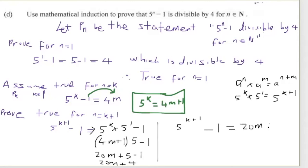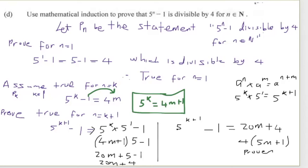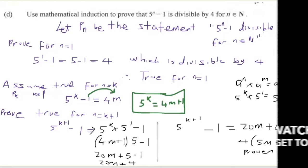Since 5^(k+1) minus 1 = 4(5m + 1), it is divisible by 4 regardless of the value of m. Since P(1) is true, and P(k) true implies P(k+1) true, by mathematical induction 5^n minus 1 is divisible by 4 for all n ∈ ℕ. Thanks for watching, don't forget to like and subscribe.